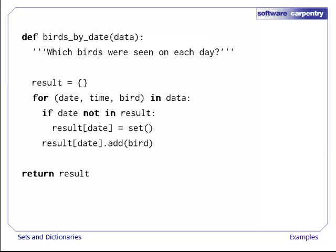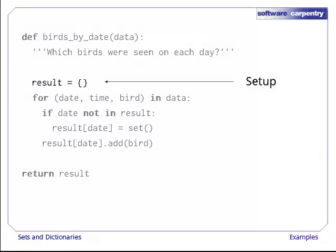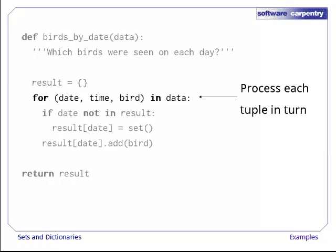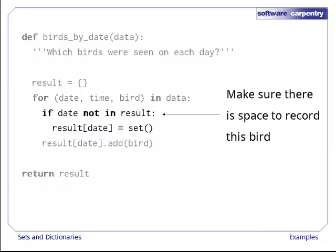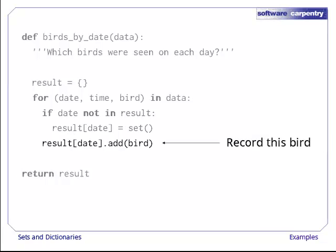Here's our function. Again, we set up by creating an empty dictionary and process each record in turn, unpacking it automatically in the loop header. Since we're recording birds by date, the keys in our dictionary are dates rather than bird names. If the current date isn't already a key in the dictionary, we add it with an empty set as the associated value. It is then safe to add the current bird to the set that's associated with the current date, since the previous two lines guaranteed that there would be such a set, even if this is the first observation for the date in question.